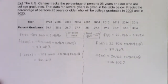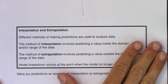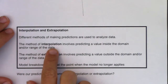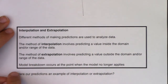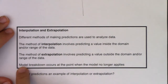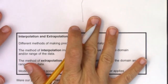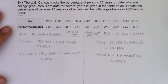Before we leave this section, let's talk about interpolation versus extrapolation. Interpolation involves predicting a value inside the domain or range of your data. Extrapolation involves predicting a value outside the domain or range of your data. Model breakdown occurs when the model no longer applies. These two predictions — 2005 and 2023 — were examples of each.